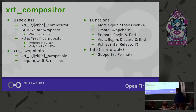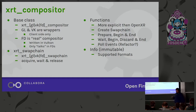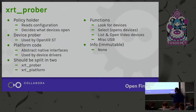Then there's the compositor interface, which has a base class with specializations on top. There's glue code to support both OpenGL and Vulkan interfaces, a real compositor that communicates using file descriptors and DMA buffers, and this basically mirrors the OpenXR interface functions that you can look up in the registry. The prober is the glue that ties everything together — it finds devices, handles platform code, and acts as a policy holder.